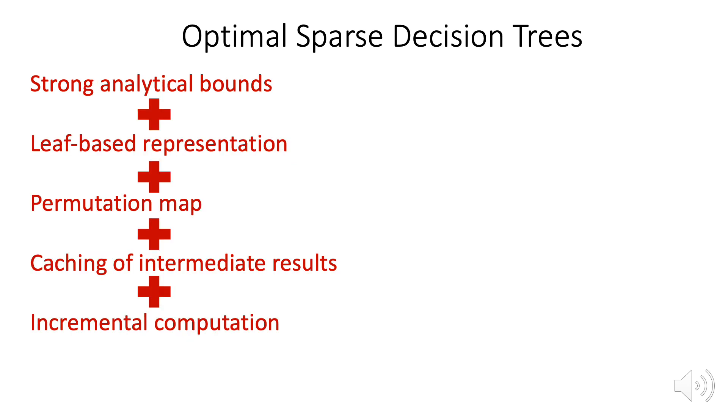These features, the strong analytical bounds, our representation, the permutation map, computational caching, and incremental computation, combine to make our implementation really, really fast, which lets us produce truly optimal and sparse decision trees.